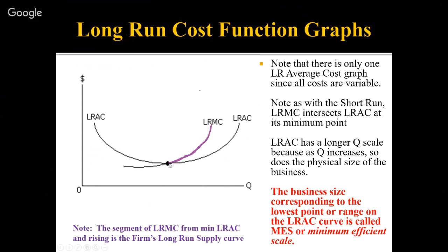This segment of the long-run marginal cost curve serves as the individual business's long-run supply curve. The firm is not in the market and not supplying if the price is below this point. But if it's equal to or greater than it, it will be supplying. And so this is the long-run supply curve. What's important to know, though, is that business size keeps changing as you move along the curve.